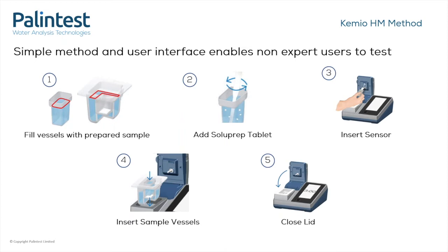As with the disinfection instrument, Chemio uses a 3D calibration which takes into account the temperature of the sample rather than just an average compensation like in some other techniques. Once the sample has been added, you add a Soluprep tablet and crush this and stir it to mix before inserting a sensor into the instrument, inserting both vessels into the instrument and closing the lid.